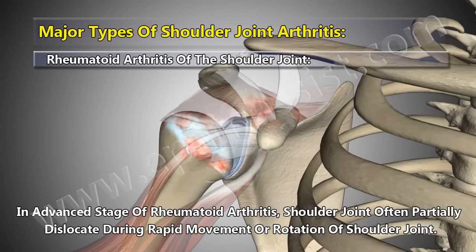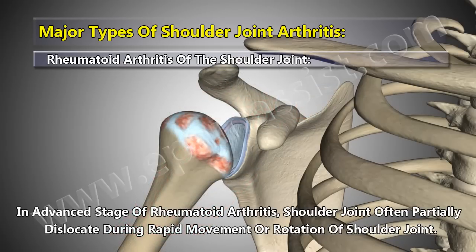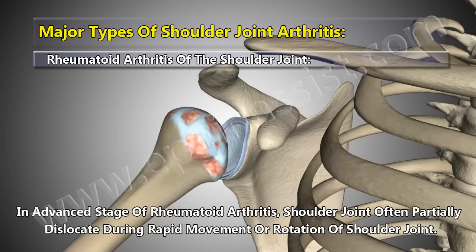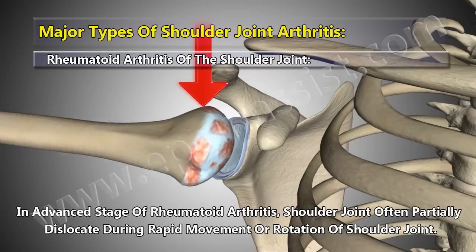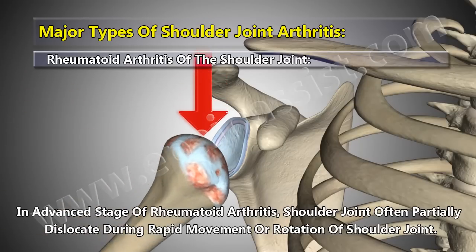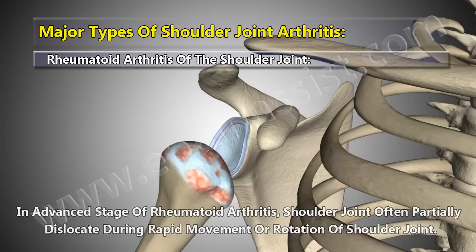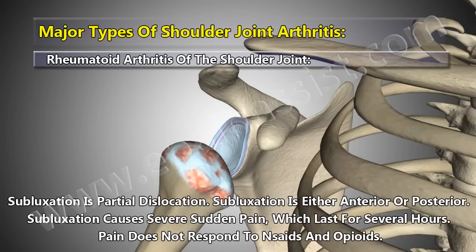In the advanced stage of rheumatoid arthritis, the shoulder joint often partially dislocates during rapid movement or rotation. Subluxation is a partial dislocation and can be either anterior or posterior. Subluxation causes severe sudden pain, which lasts for several hours, and does not respond to NSAIDs or opioids.